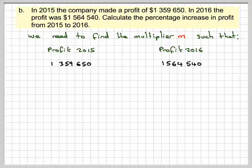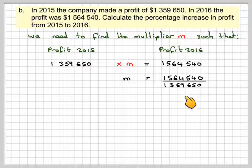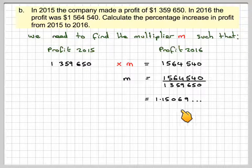So, we're going to take this one and multiply it by some multiplier, M. What we've got to do is find the M. So, M will be this one divided by this one. So, it's going to be 1,564,540 divided by 1,359,650. Working that out on my calculator, I'm going to get 1.15069.